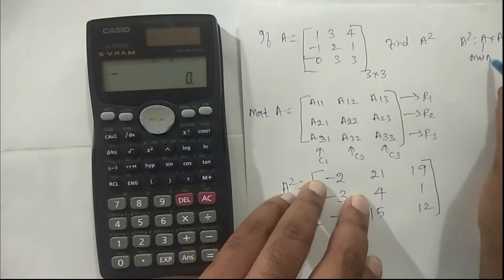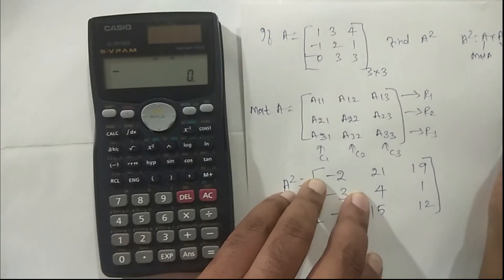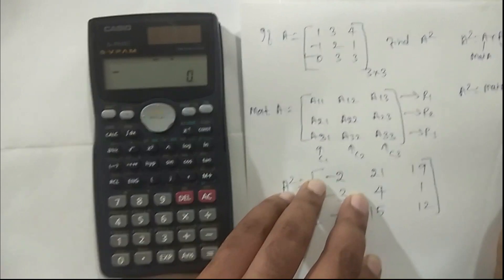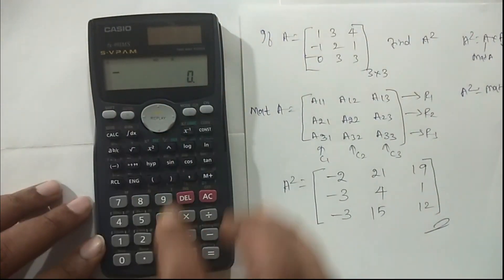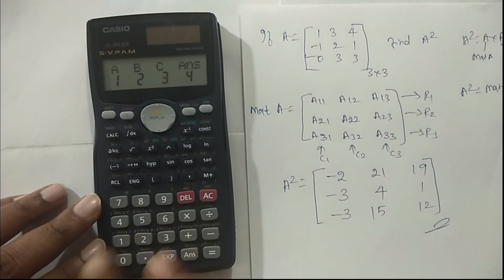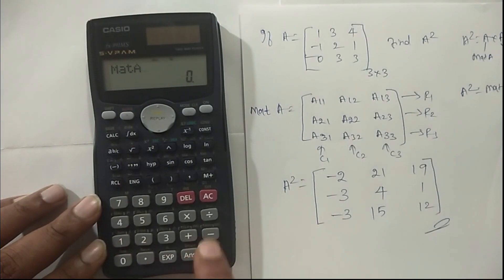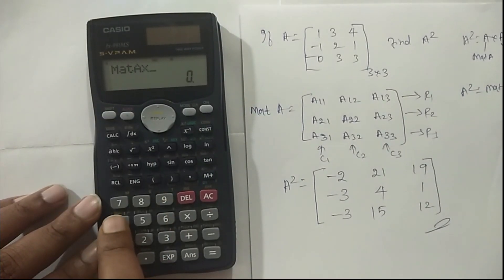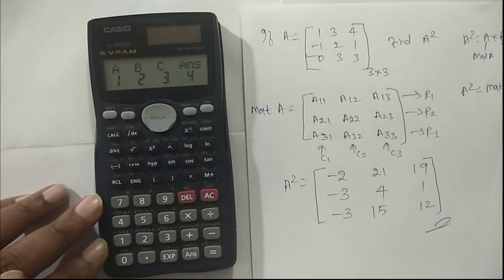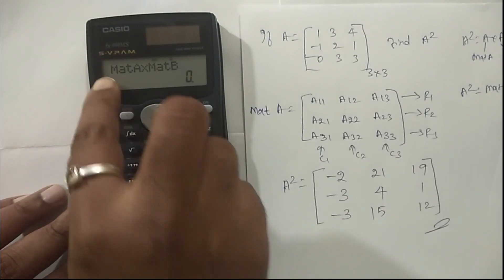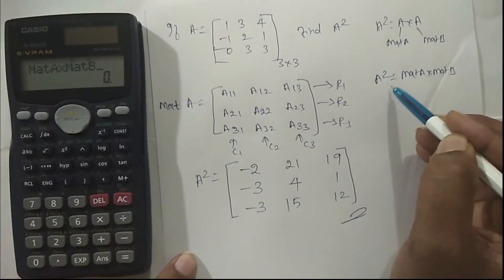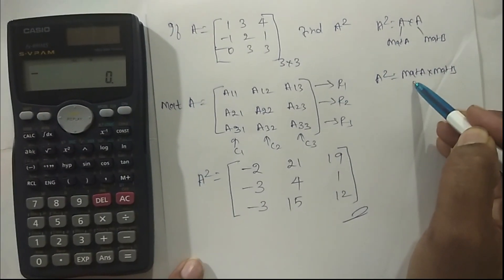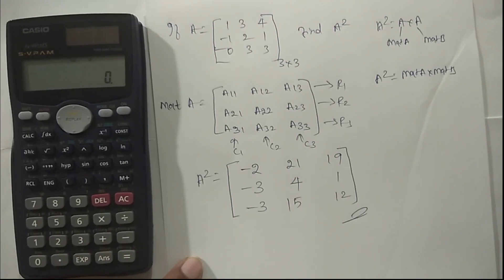I will get this answer. Press Shift Mat, so matrix appears. Press 3. Select matrix A by pressing 1. Then put multiplication operation. Again Shift 4, 3 to select the matrix operation. Then select matrix B by pressing 2. See here, mat A into mat B. So for A square, mat A into mat B. Simple operation.